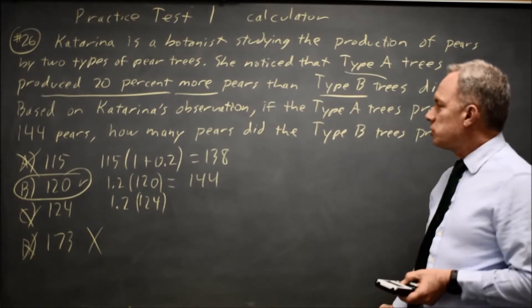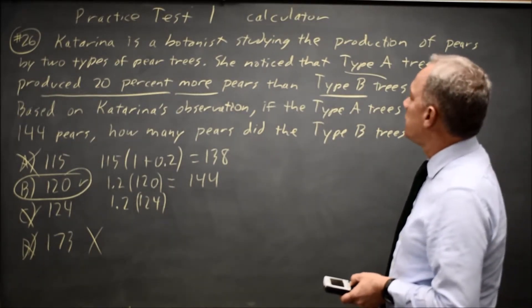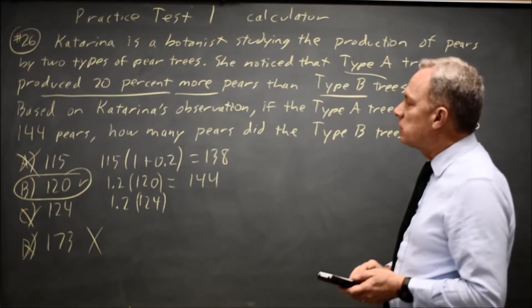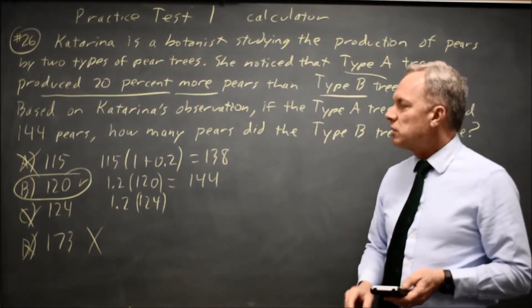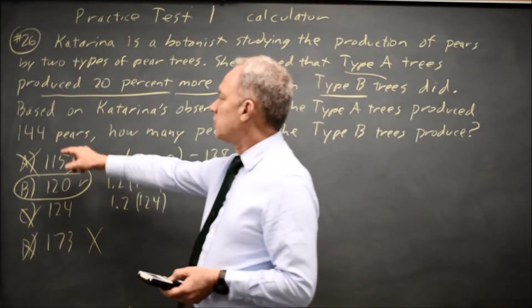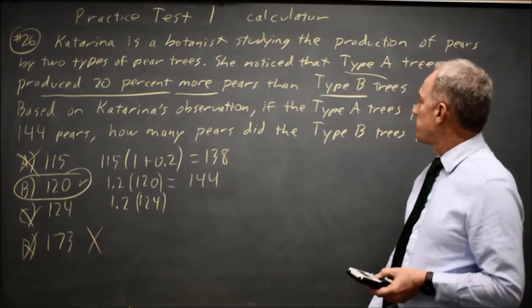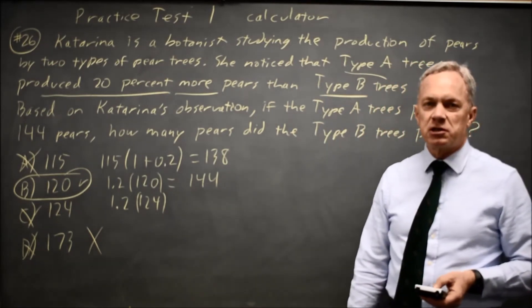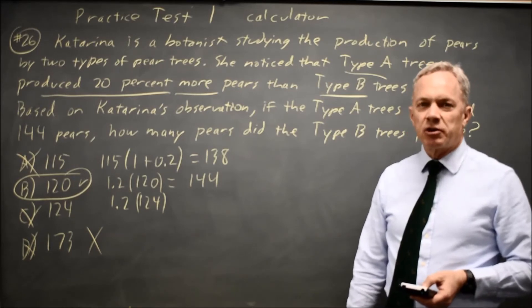If type B produces 120 pears, presumably per tree, and type A is 20% more, 20% of 120 is 24. Type A produces 144 pears, which is 20% more than 120, so that would be the correct answer.